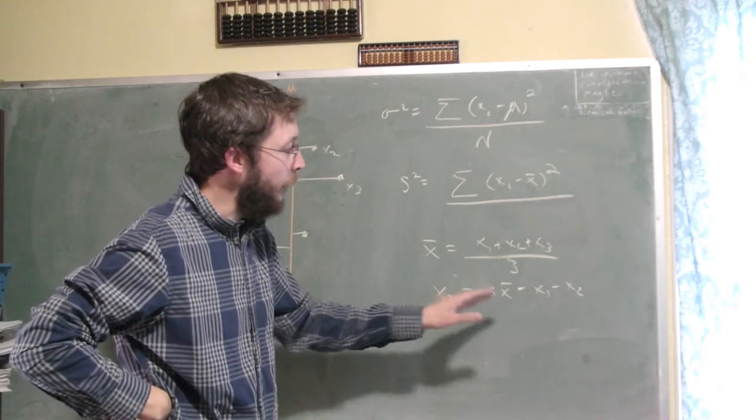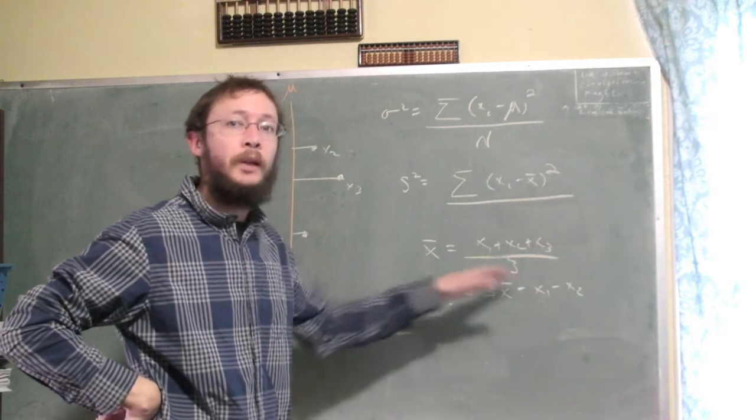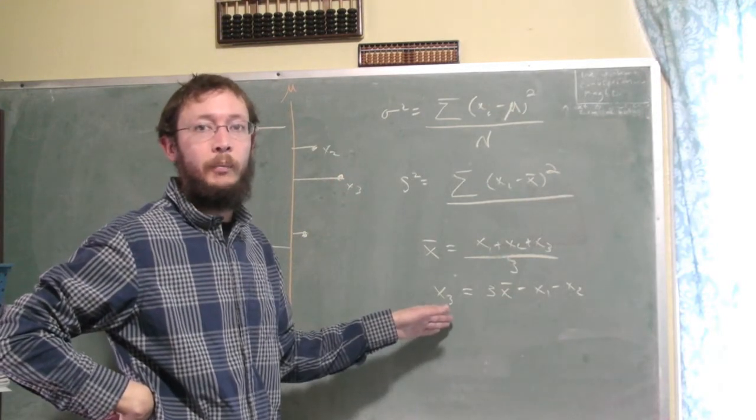The x-bar is fixed at some known value. So the only true random variables that we have are x1 and x2, because x3 can be written in terms of them.